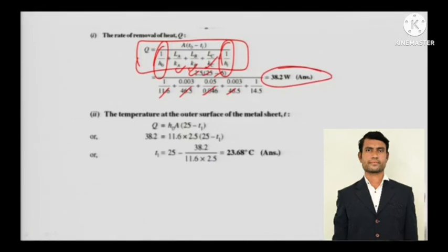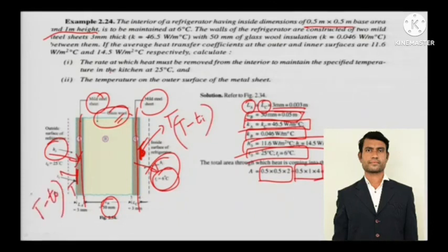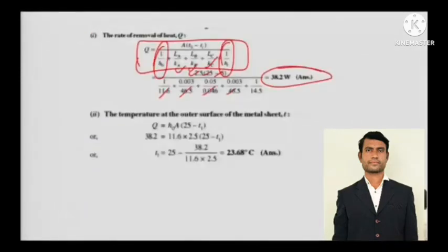The temperature at the outer surface of the metal sheet can be calculated by convection. There is a temperature at the external surface and here you have a temperature, so it will be T minus TO. That's pretty simple - just apply Newton's law of cooling.